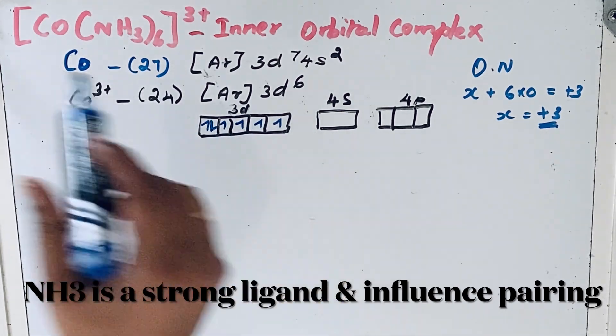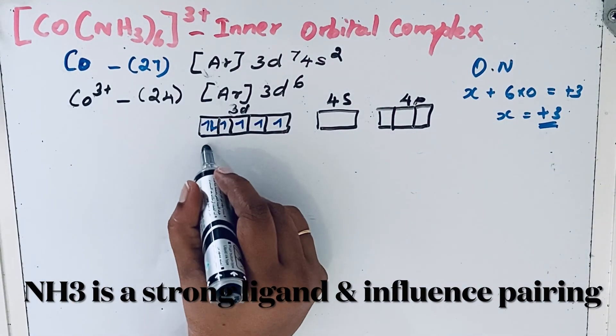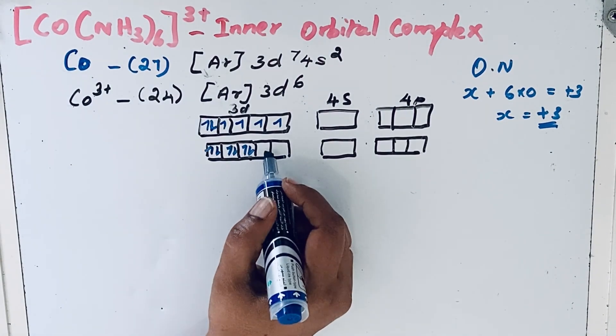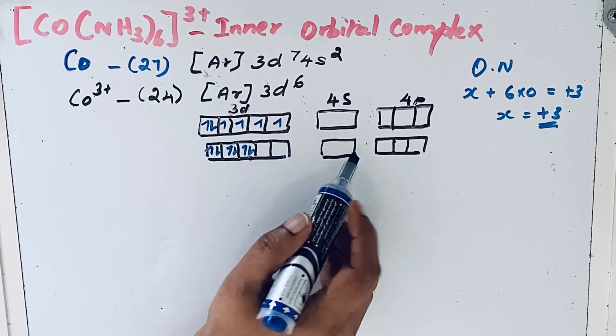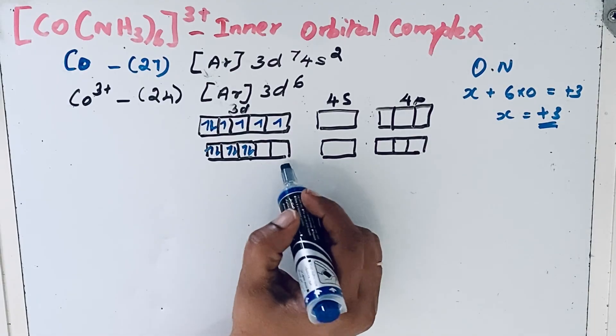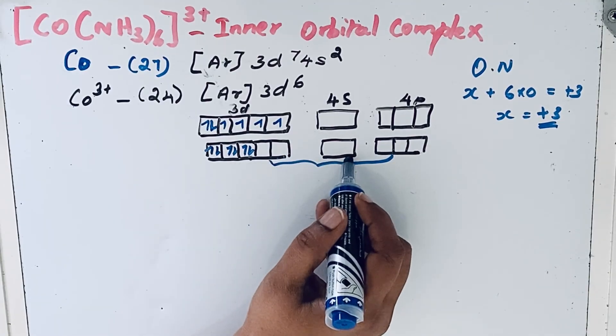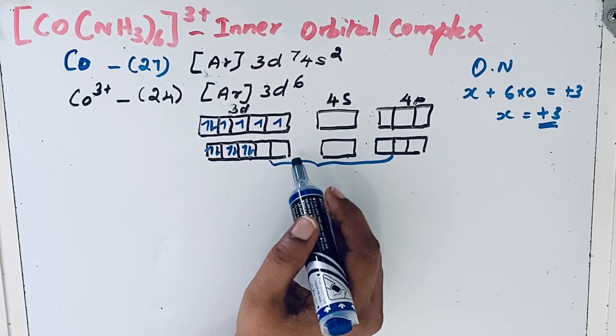The pairing of electrons occurs in the 3d orbitals. We now have two empty d orbitals, one 4s orbital, and three 4p orbitals. These intermix and form d2sp3 hybridization.